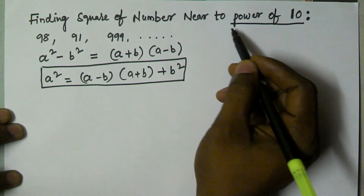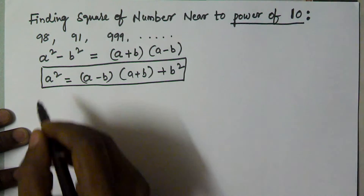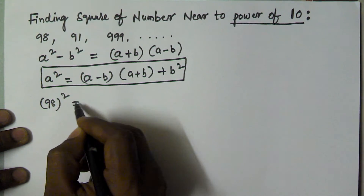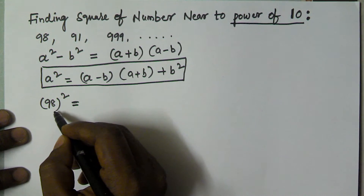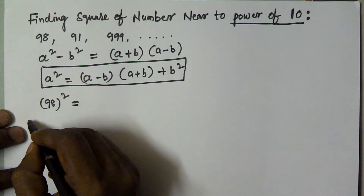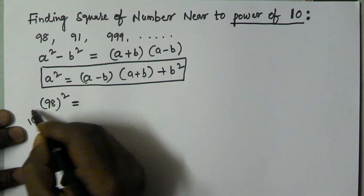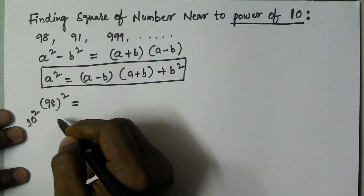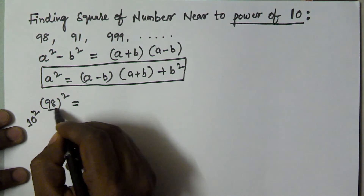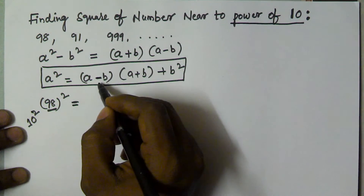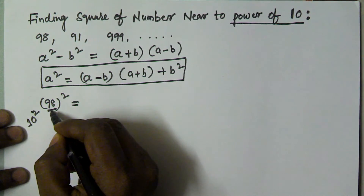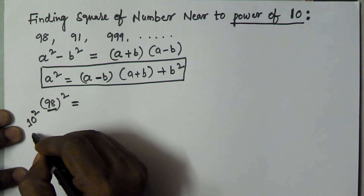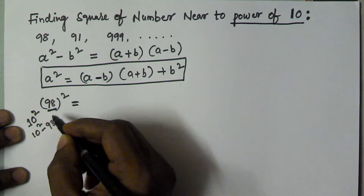Now consider: I want to find 98 squared. 98 is near to 100, which equals 10 squared. Here a is 98. To find the value of b, we take the nearest power of 10 — that is 100 — minus the given value, 98. So b equals 2.